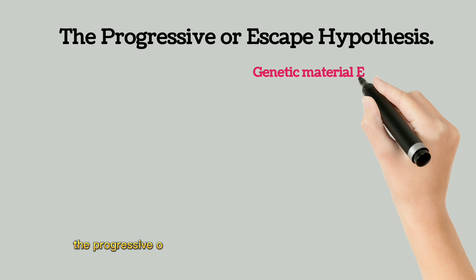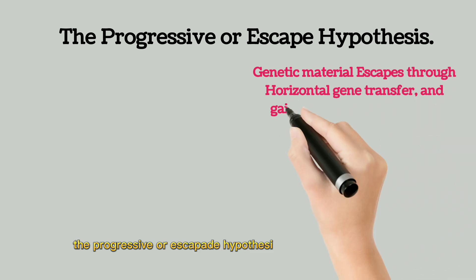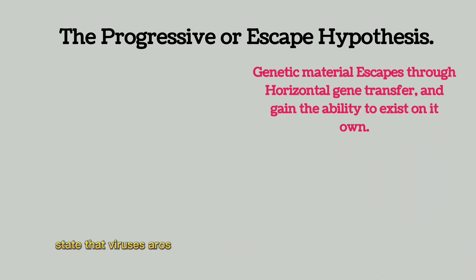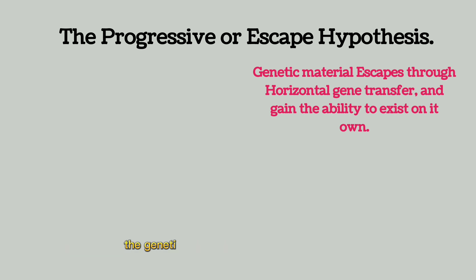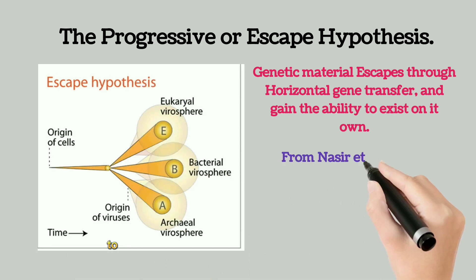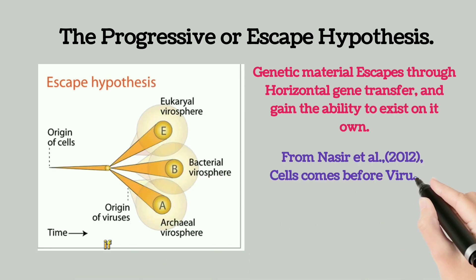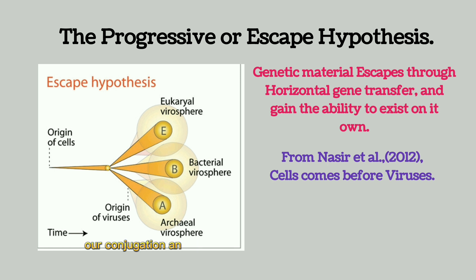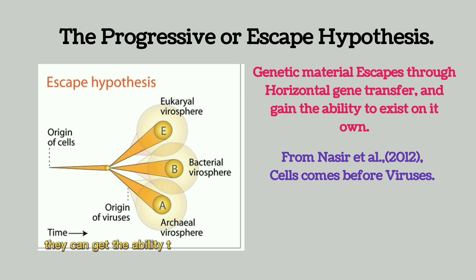The progressive or escape hypothesis states that viruses arose from genetic elements that gained the ability to move between cells. The genetic material capable of transferring from one cell to another through horizontal gene transfer — if you can recall transduction, conjugation, and transformation from bacteriology — can get the ability to exist on their own, and hence become viruses.